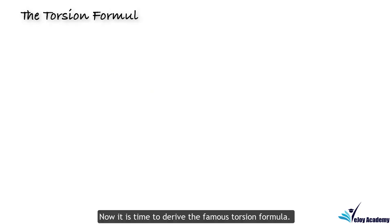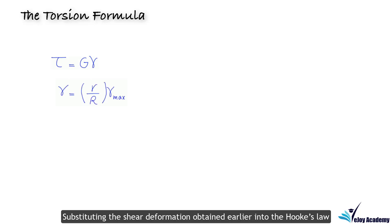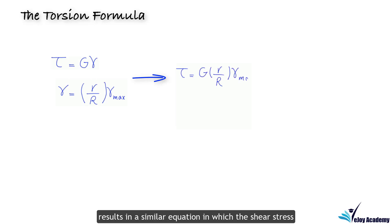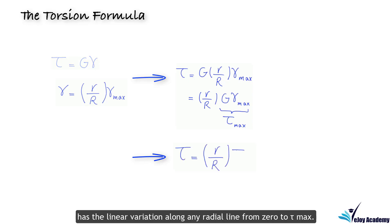Now it is time to derive the famous torsion formula. According to the assumptions, the shaft's material behavior is linear elastic and follows Hooke's law under the shear deformation. Substituting the shear deformation obtained earlier into Hooke's law results in a similar equation in which the shear stress has the linear variation along any radial line from 0 to tau max.